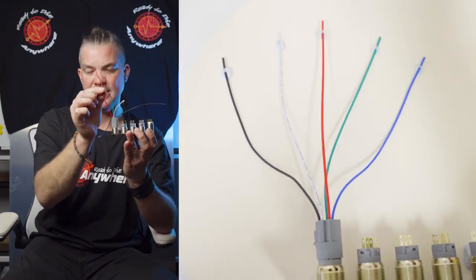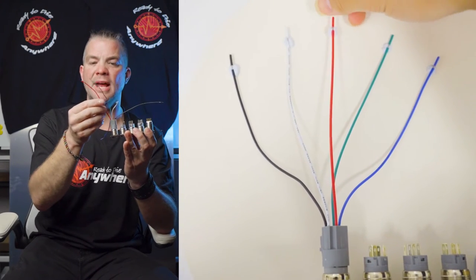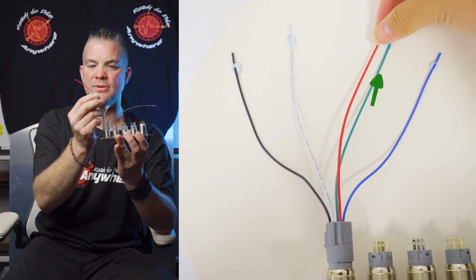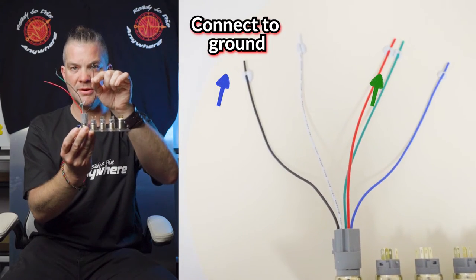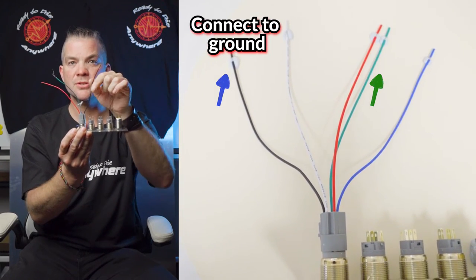So join that to the green cable, and then connect the black, which is ground for the halo LED, to ground in your setup.